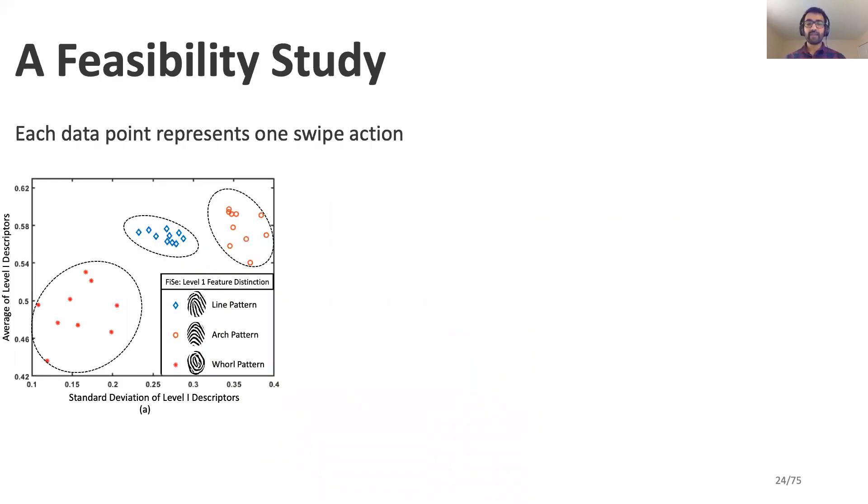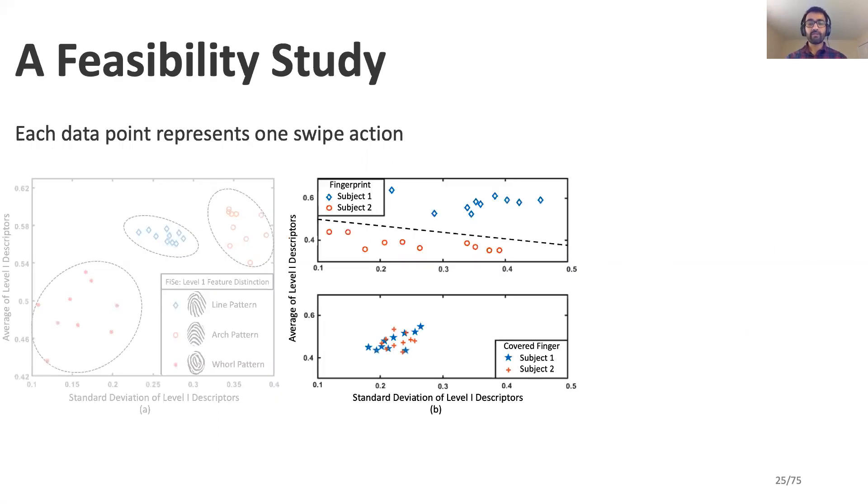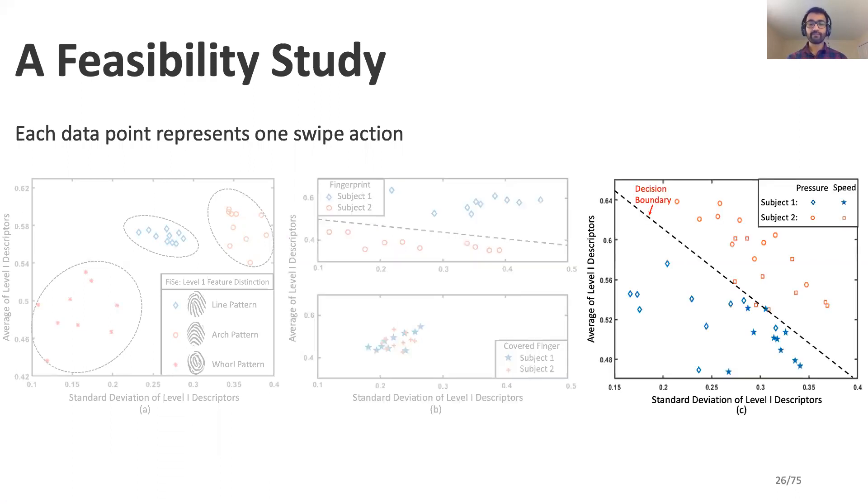From our analysis, we identify that a unique fingerprint pattern generates a unique FICE. We also confirm that the uniqueness is based on the fingerprint difference between subjects rather than the overall structure of their finger. Lastly, we verify that human dynamics such as pressure or speed during the swipe action has limited effects on the identification of FICE.